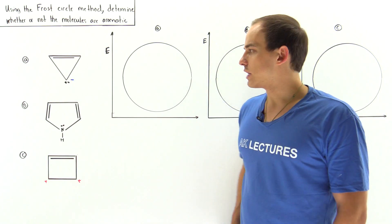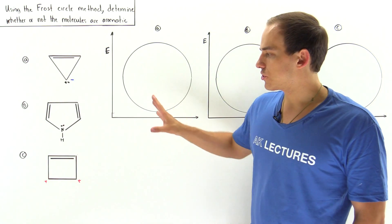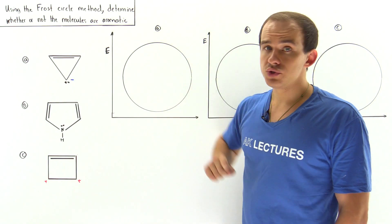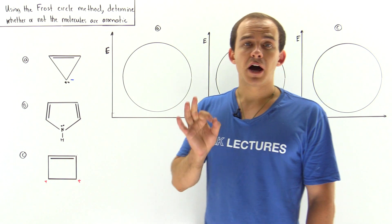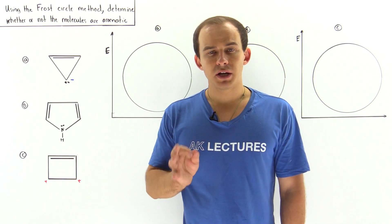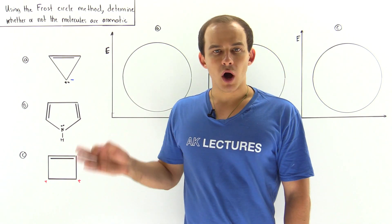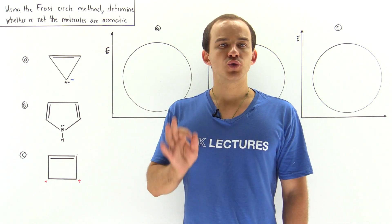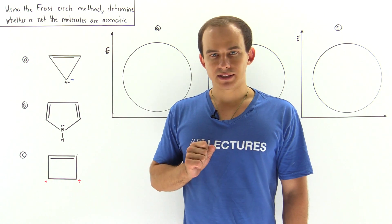Let's take a look at the following three molecules and by using the Frost circle method determine which ones are aromatic and which ones are not.